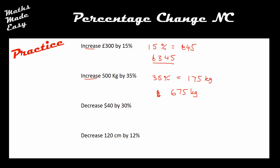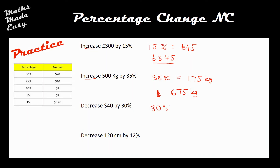For the next one I have $40 which needs to be decreased by 30%. From my five key percentages, 30% is $12. Because this is a decrease, I do 40 minus 12 and the correct answer is $28.